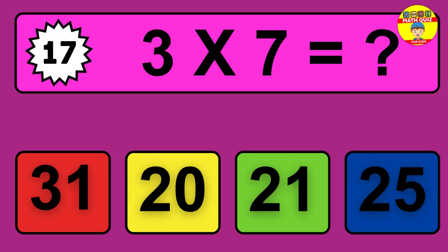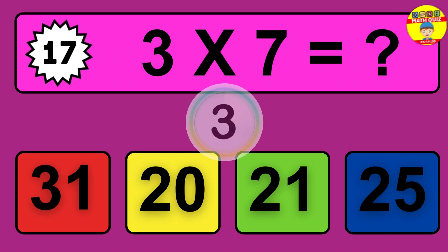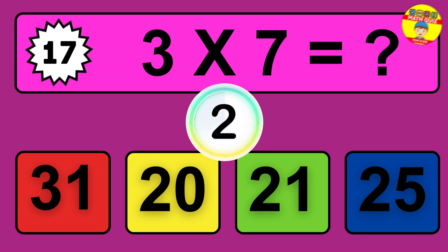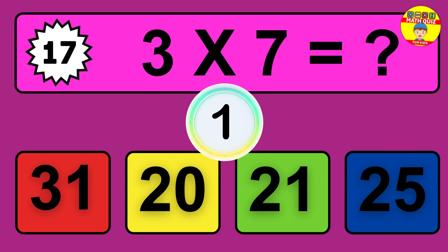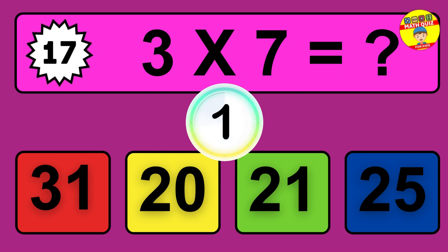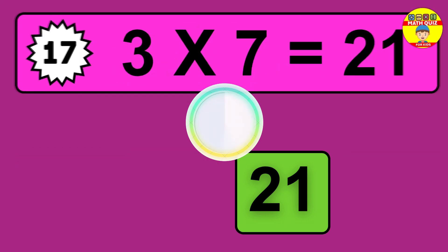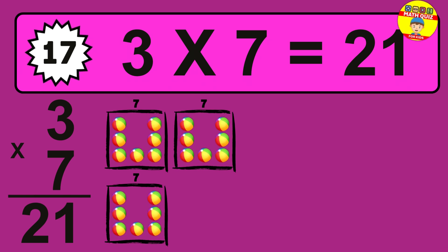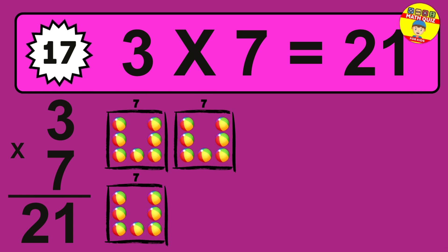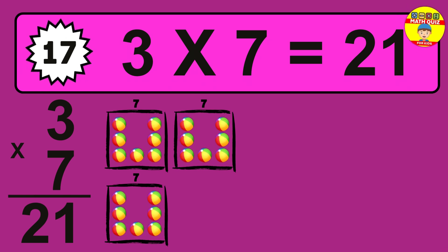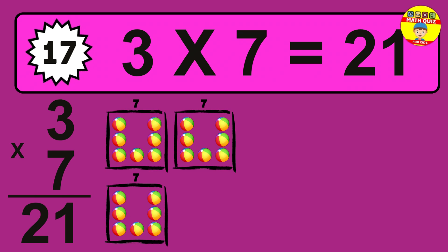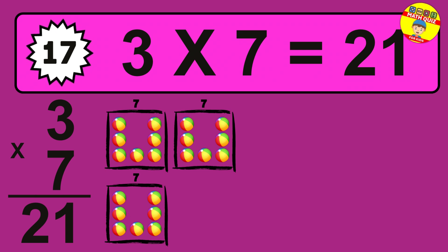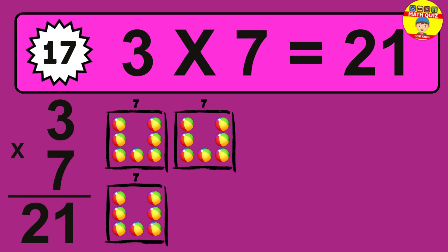Question 17. 3 times 7 equals what? The answer is 3 times 7 is 21. To calculate, we have 3 groups with 7 balls each one. So how many balls do we have? 21 balls.